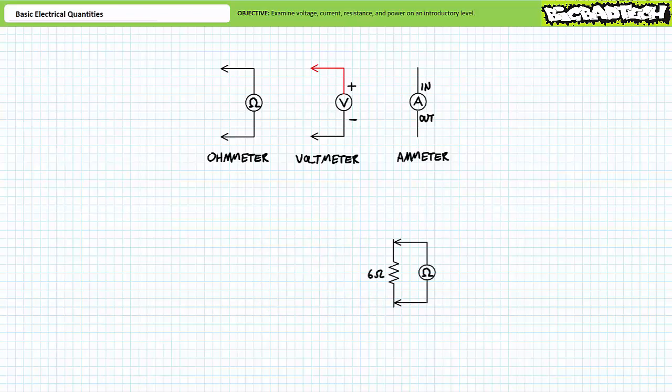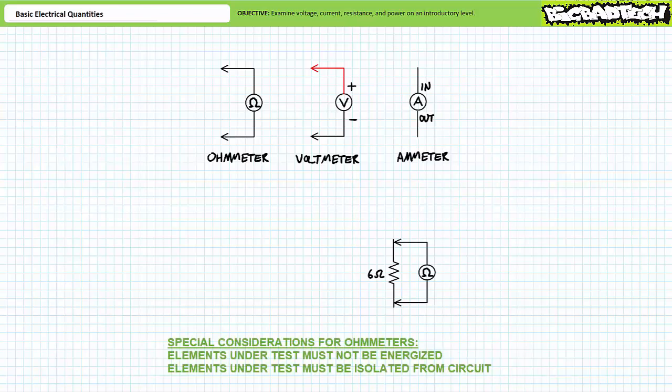Ohmmeters measure the resistance of an element under test placed between the two leads in the units of ohms. Elements under test must not be energized and must be removed from a circuit to obtain a proper resistance measurement. Let's say this resistor being measured by the ohmmeter has a resistance of six ohms.